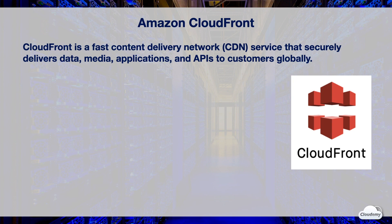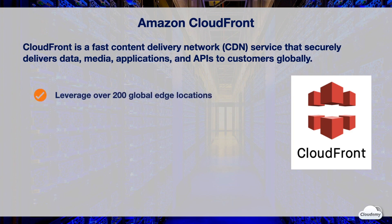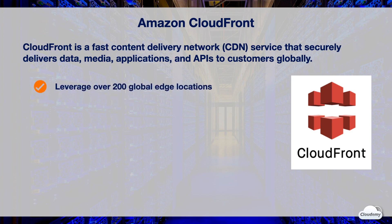CloudFront speeds up the distribution of your static and dynamic content such as HTML, CSS, JS files, images, and videos to your users using the global edge locations. CloudFront leverages over 200 edge locations for content caching and uses a highly resilient Amazon backbone network to deliver content with high performance and high availability to your end users.